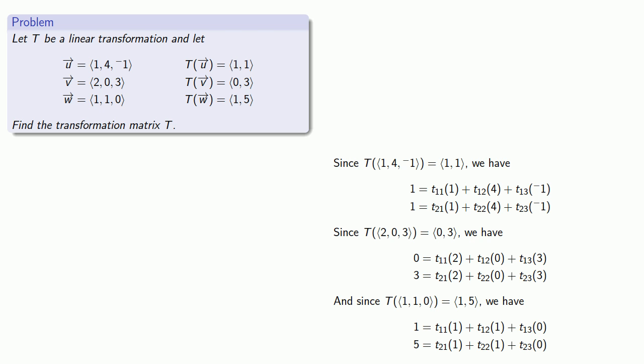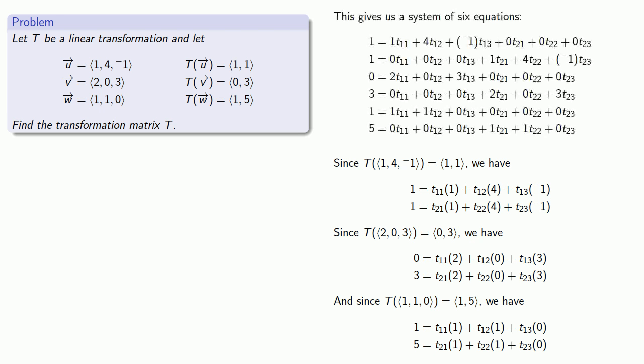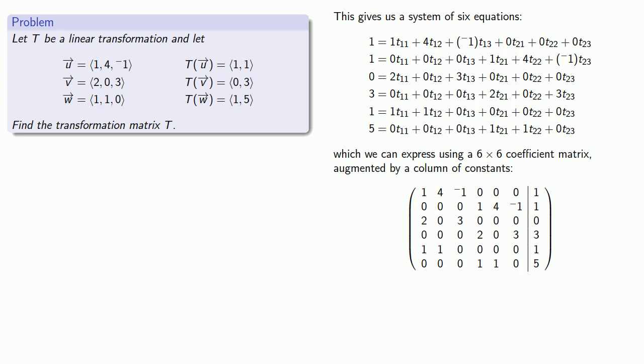And this analysis gives us 6 equations with 6 variables, T11 through T23. And so I can put them all together into a single set of 6 equations with 6 unknowns. And we can express this system using a 6x6 coefficient matrix augmented by a column of constants. Row reducing this matrix will give us the entries in our transformation matrix.